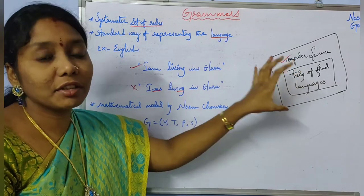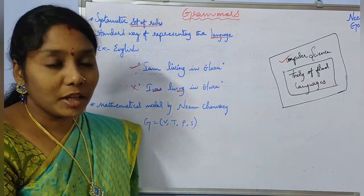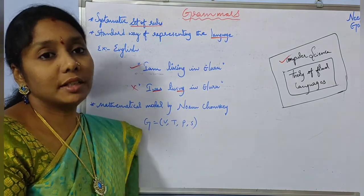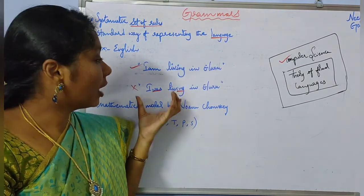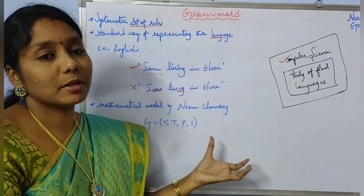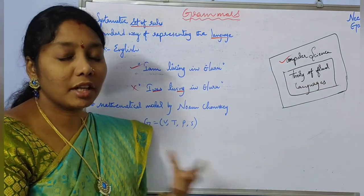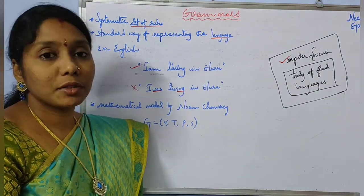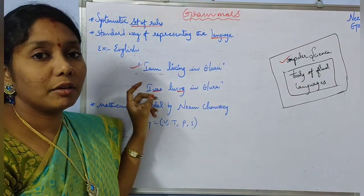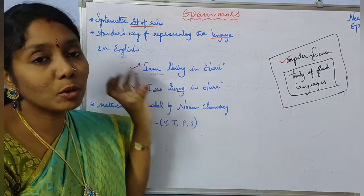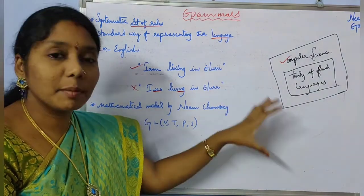The same concept is applied in computer science in the theory of formal languages. In theory of formal languages we have regular languages, context-sensitive languages, and context-free languages. Wherever you have a language, there should be a grammar consisting of some set of rules to define that language.